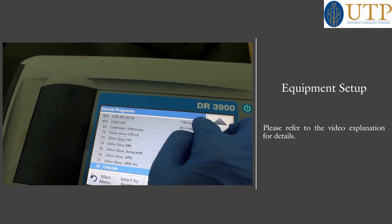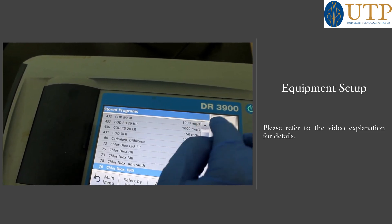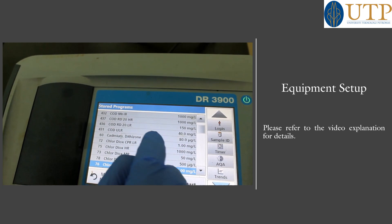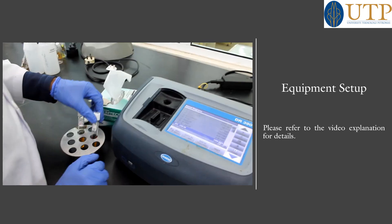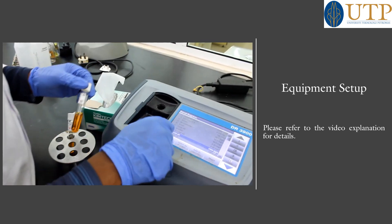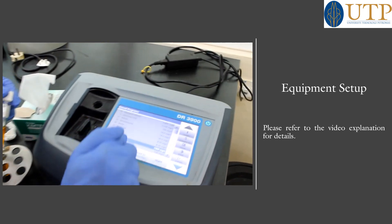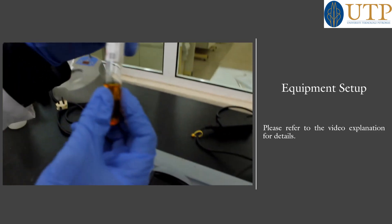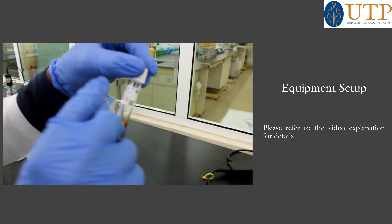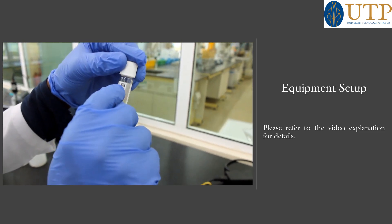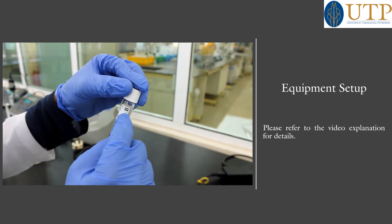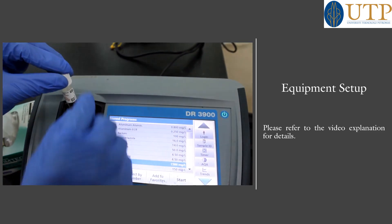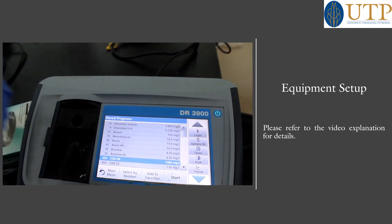Here is COD. We have COD HR and COD. You can see we are set already at COD High Range, because the COD vial I have here is COD HR — High Range. Click.